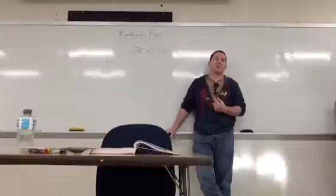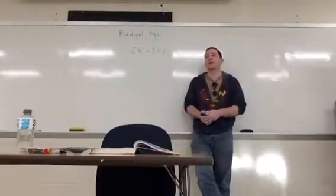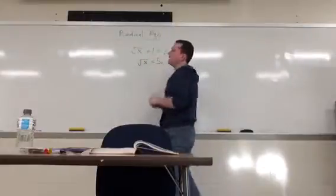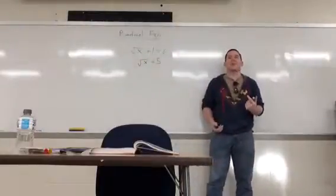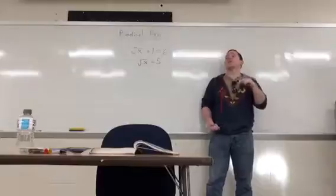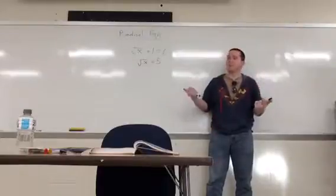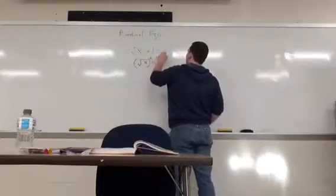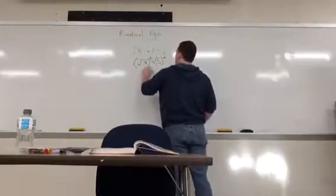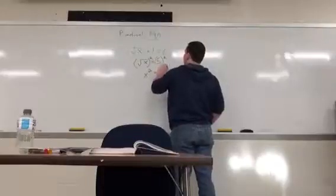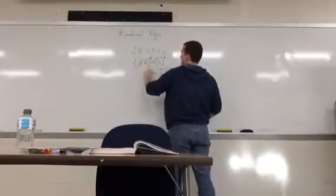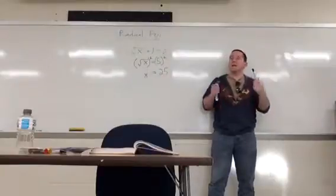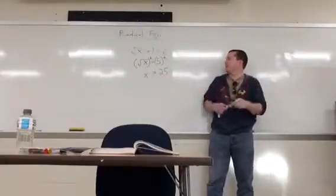How do you get it by itself? Subtract the 1. Then you get square root of x equals 6 minus 1, 5. Now that you've isolated the problem, now you can deal with it. How do you get rid of a radical? Square it, right? Square both sides to keep things equal. Square root of x squared is x. And you get x equals 25. And we're done, right?